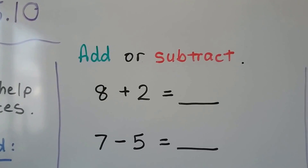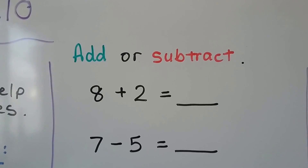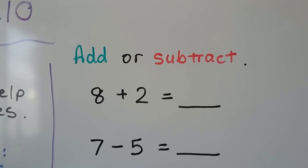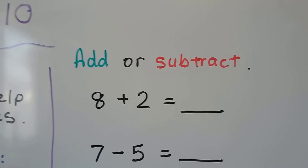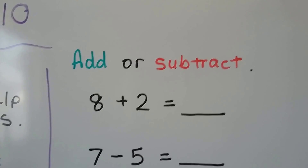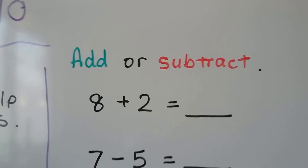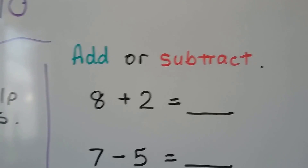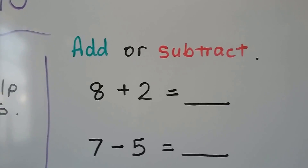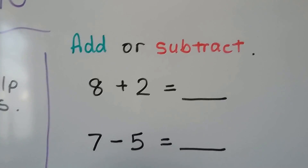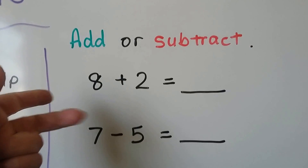It says to add or subtract — we have 8 plus 2. Let's try counting on. We're only adding a 2, so we can start with the 8, the larger addend, and count on 2: 8, 9, 10.